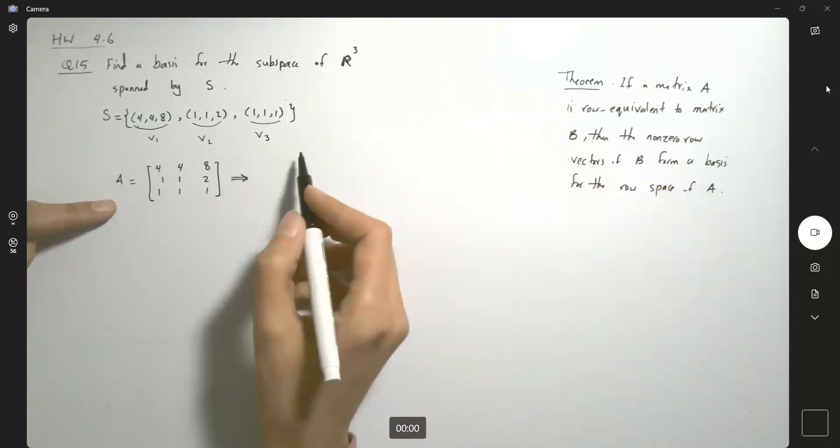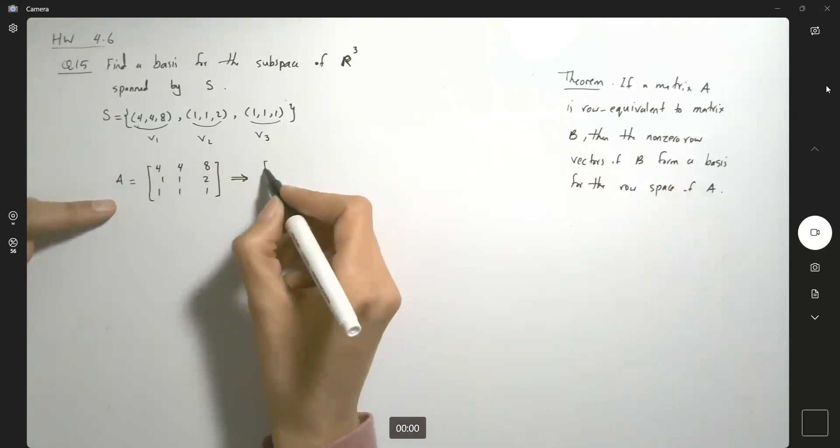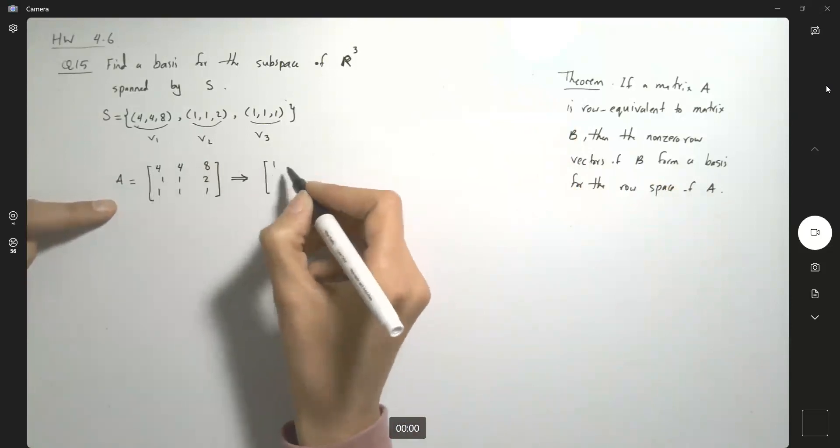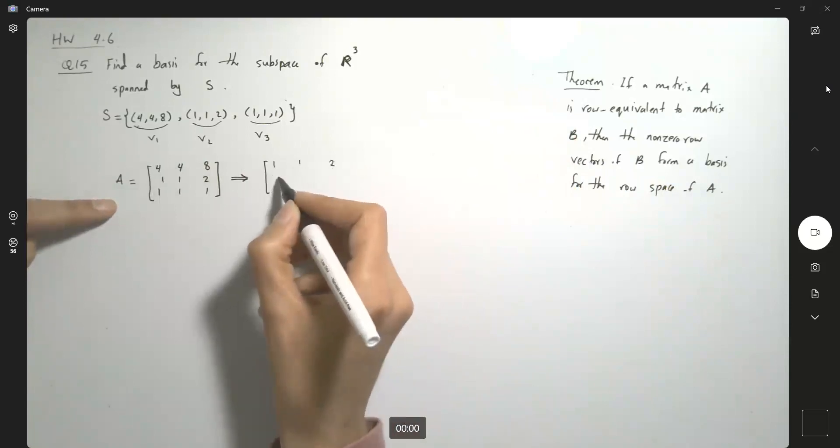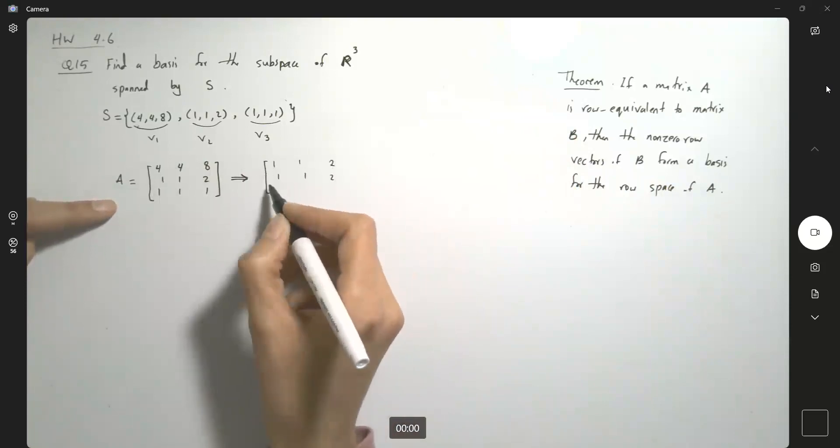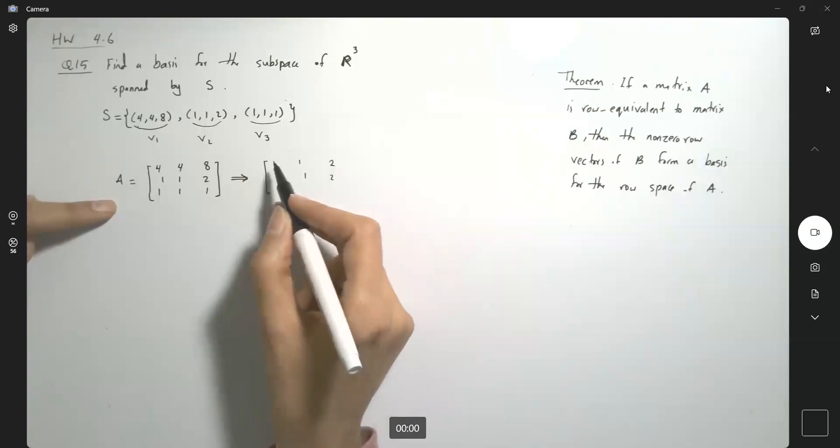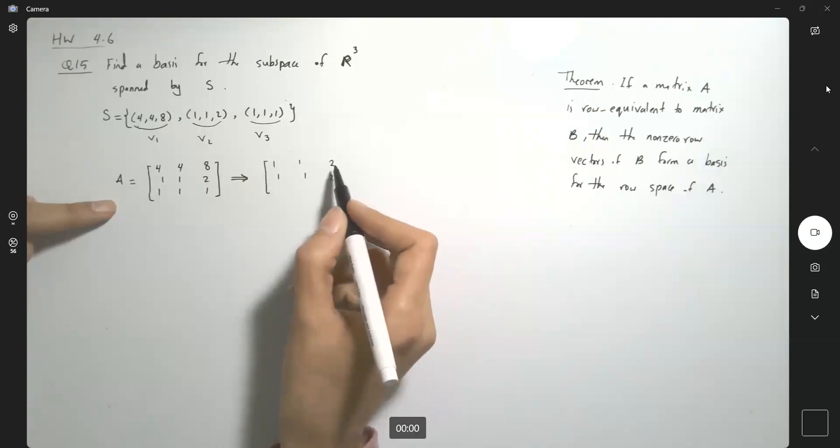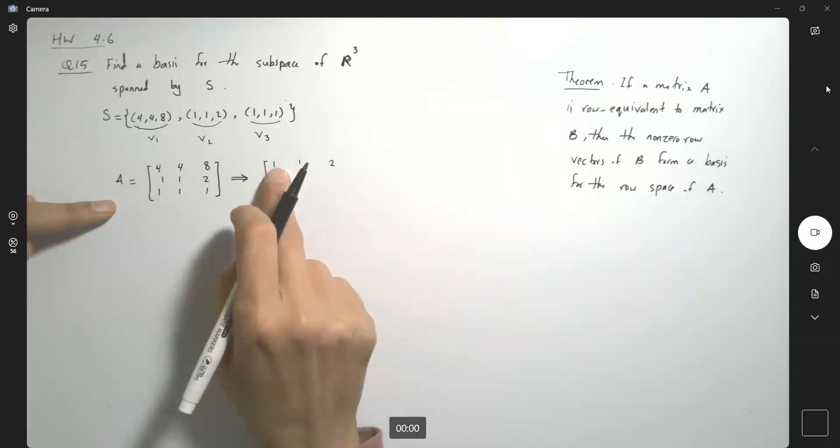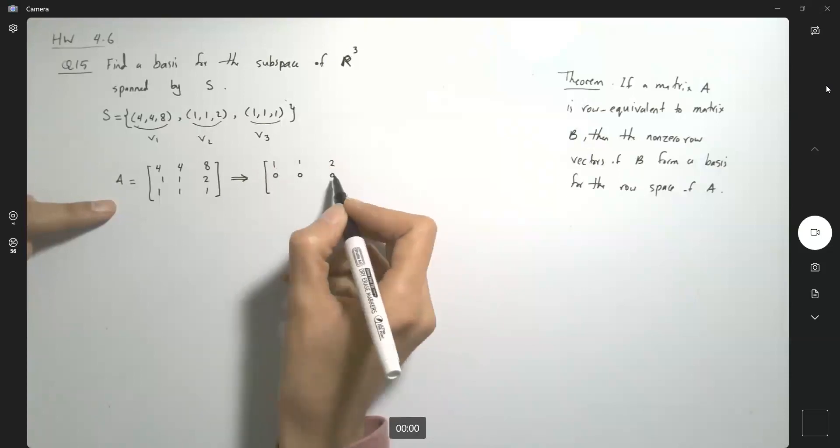Very good. So first of all, we can divide this guy by four. It is (1, 1, 2). Then you have (1, 1, 2). So hey, we have a nice thing going on here. If I multiply the elements of the first row by negative one and add it here, you get (0, 0, 0).